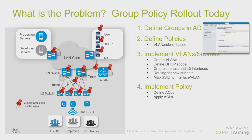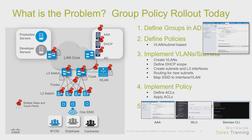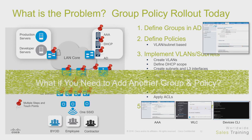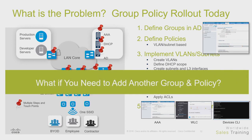Then you need policy — you can't have a flat network, segmentation is a big deal. So you start applying ACLs: 101 can't talk to 102. To the business that means absolutely nothing, but to you it means marketing can't talk to accounting. On top of that, we're using multiple tools: CLI, wireless LAN controller, Prime Infrastructure, SolarWinds. To control and monitor my network I have four or five different places I have to go to just to get started. And if I have to add another group or another policy, it's tons of work — it's taking forever and I can't keep up anymore.